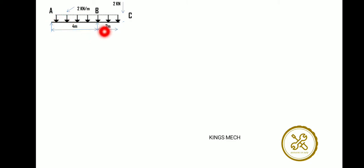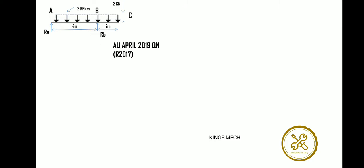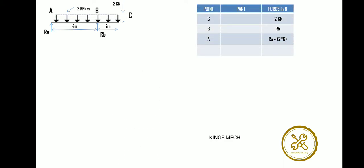The problem: a beam with overhanging on one side. At the end there is a 2 kN point load. The UDL on the beam is 2 kN per meter over 6 m (2 + 4 = 6 m). The reaction supports are RE and RB. This question has been asked in Anna University 2019 question paper, Regulation 2017.